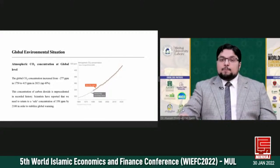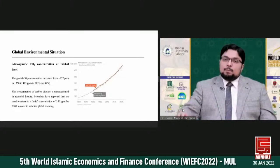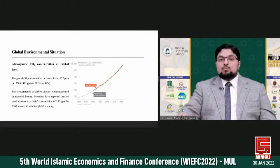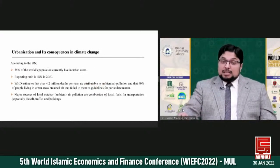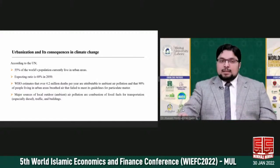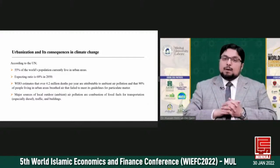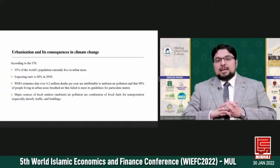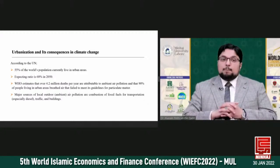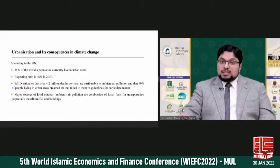Scientists have reported that we need to return to a safe concentration of 350 ppm by the end of this century in order to stabilize global warming. According to the United Nations, 55% of the world's population currently lives in urban areas. That number is expected to increase to 58% by 2050. The bulk of this increase in urbanization is expected to come from only a handful of countries, with China, India, and Nigeria projected to contribute nearly a billion people to the urban population.